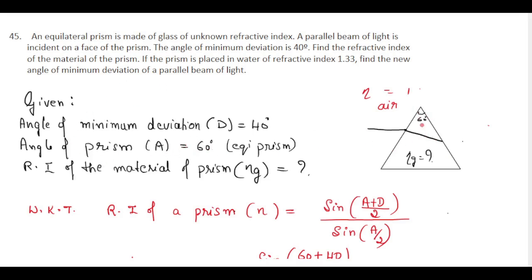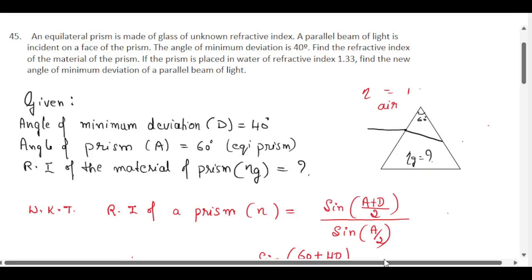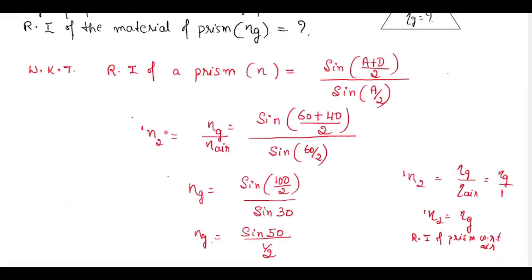We need to find the refractive index of the material of the prism. We know that refractive index of the prism n equals sin((A + D)/2) divided by sin(A/2). This is the standard formula. Here we are finding the refractive index of the prism with respect to air. The refractive index of glass with respect to air — since the refractive index of air is 1 — simplifies to n_g, the refractive index of glass.